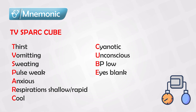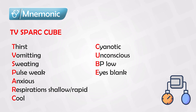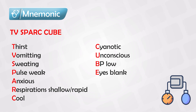The patient will be thirsty and will have vomiting and sweating. These are due to effects on the autonomic nervous system. Generally, any disturbance that causes great harm to the nervous system will produce these symptoms.